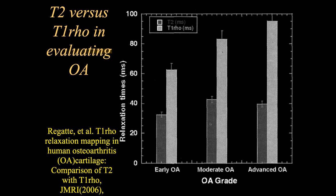T2 is basically a measure of integrity of the collagen. Histologically when looking at OA, you're really looking at loss of proteoglycan content. So T2 images are abnormal but don't correlate with the degree of proteoglycan loss — they correlate with disruption of the collagen fibers. Whereas T1-Rho shows a more linear relationship with advanced osteoarthritis, correlating with the amount of proteoglycan loss within the tissues.